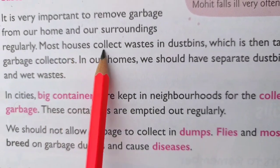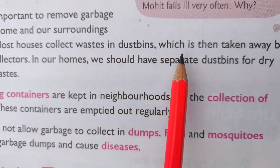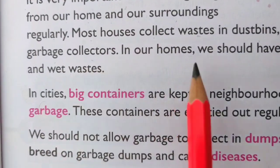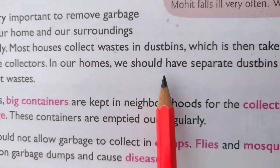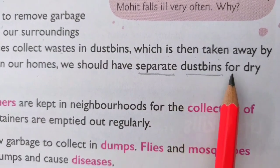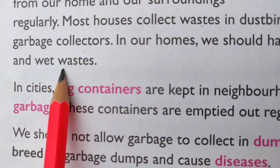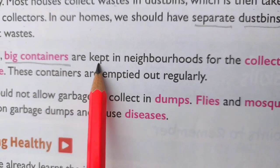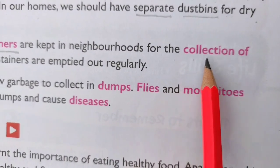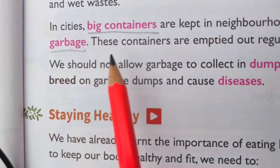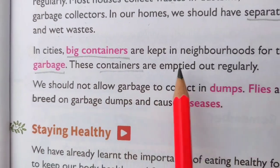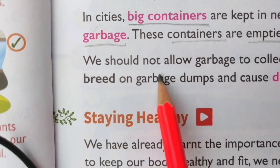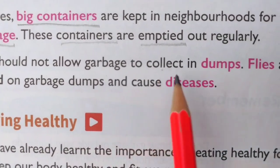Most houses collect waste in dustbins, which is then taken away by garbage collectors. In our homes, we should have separate dustbins for dry and wet wastes. In cities, big containers are kept in neighborhoods for the collection of garbage. These containers are emptied out regularly. We should not allow garbage to collect in dumps.